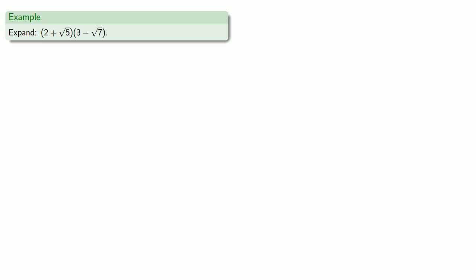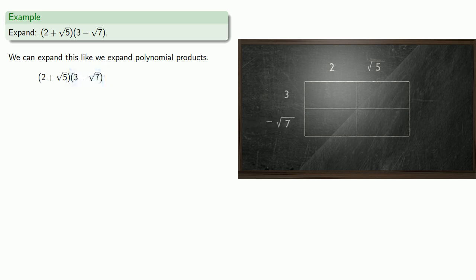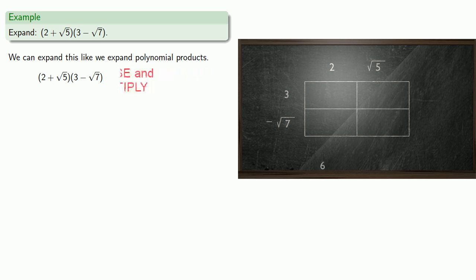How about something like this? We can expand this like we expand polynomial products, so let's draw our grid. One side of the rectangle will be 2 plus the square root of 5, and the other will be 3 minus the square root of 7. We'll multiply, and since all of our radicals are different, we can't really do much more than record the results.